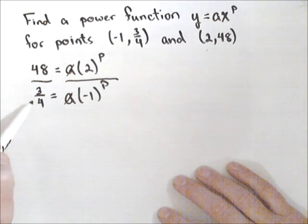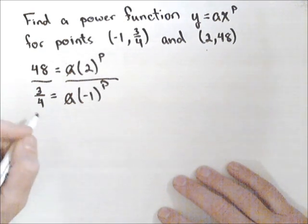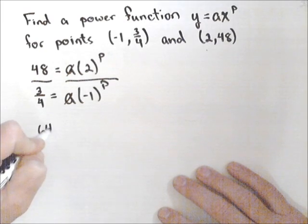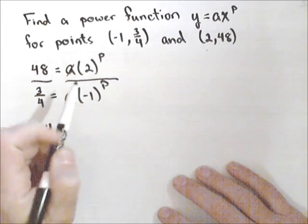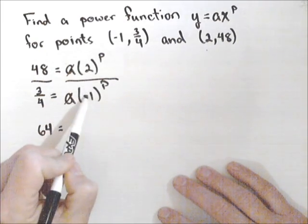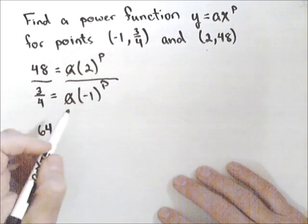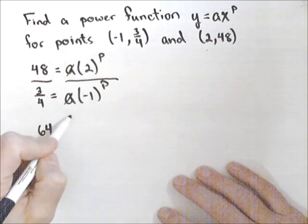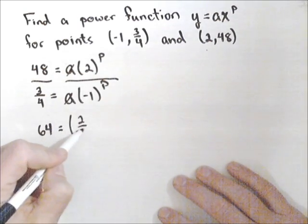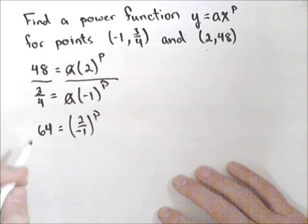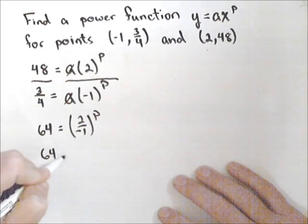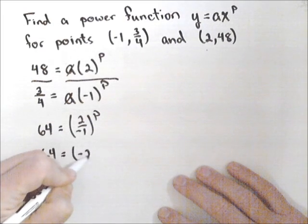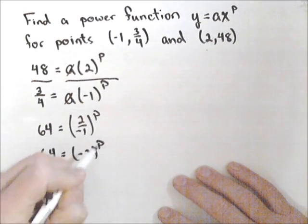I end up with 48 divided by 3/4, which gives me 64. On the right side, I have 2^p over (-1)^p. By properties of exponents, I can write that as (2/-1)^p, or 64 = (-2)^p.